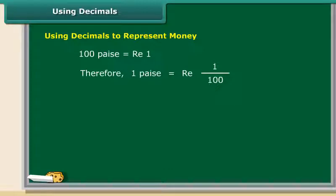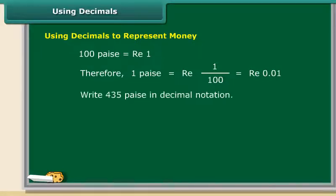We are aware that one hundredth can be written as 0.01 in decimal notation. Let us now use the decimal notation to write 435 paise.